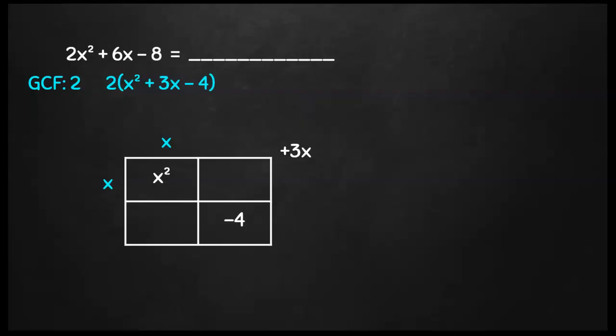Again, figuring out what multiplies to x squared is x and x. I got 4 and negative 1 that are going to multiply to that negative 4. When I fill out my box, it does get me to that 3x in the corner. Now I can write my factors as x plus 4 and x minus 1. And don't forget that GCF of a 2. It is part of your final answer, so make sure you leave it out in the front.